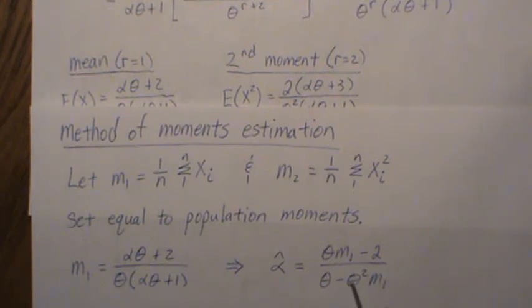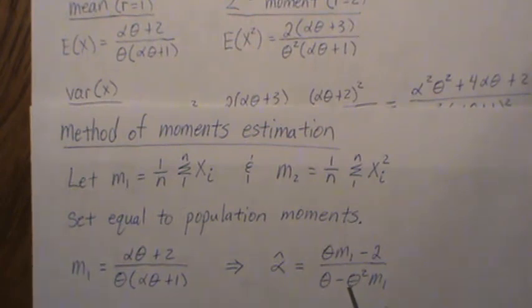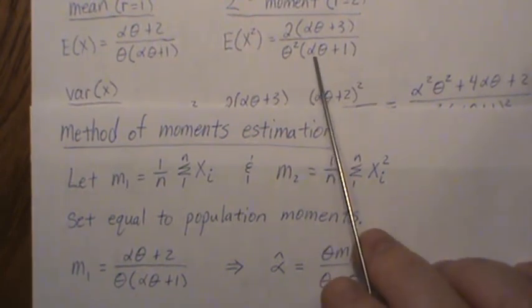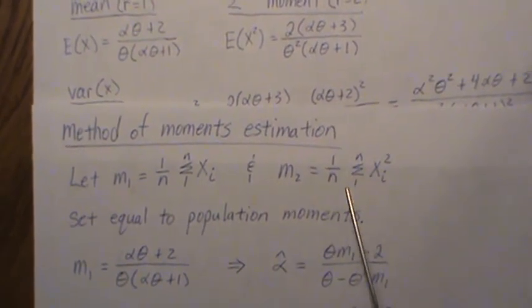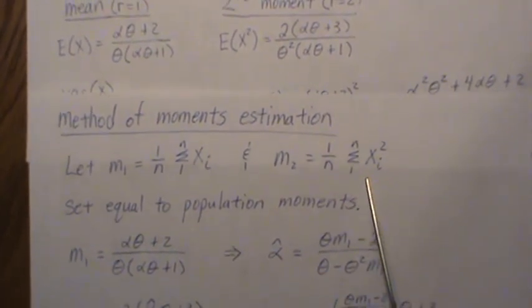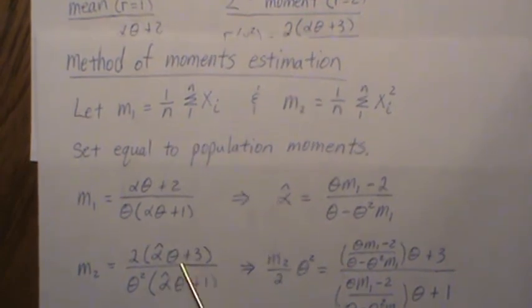So this is our method of moments estimator for alpha. But now we need to solve for theta. What we do is we take the second moment and set it equal to the second sample moment.